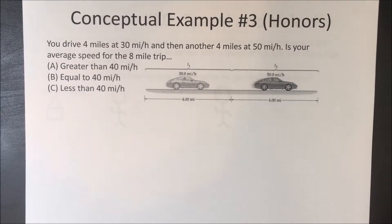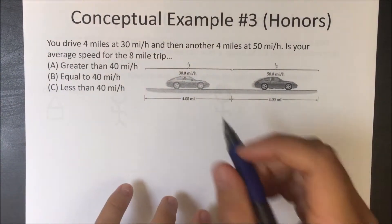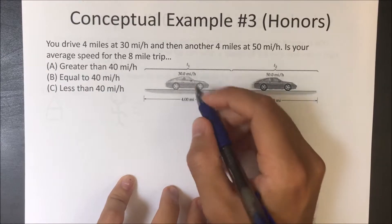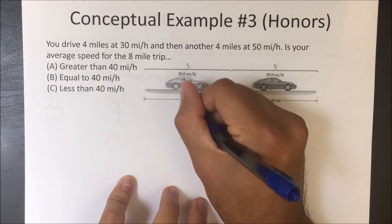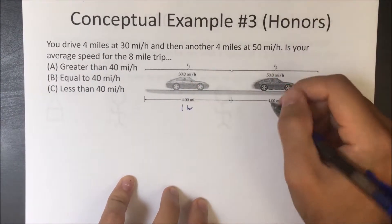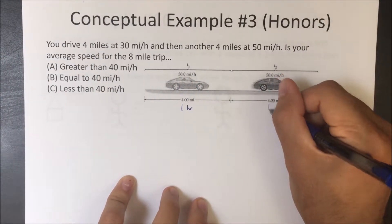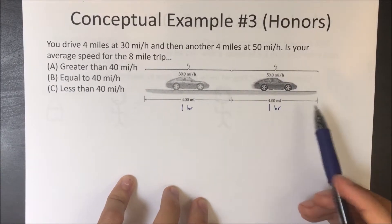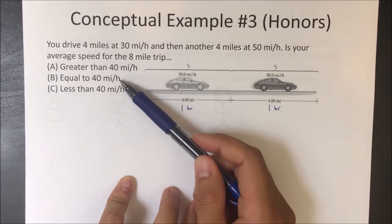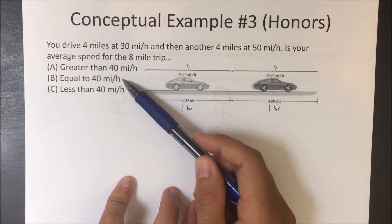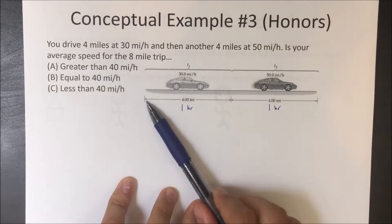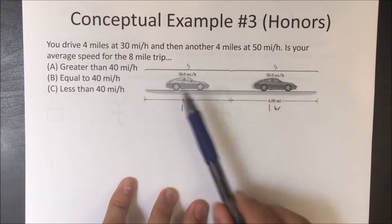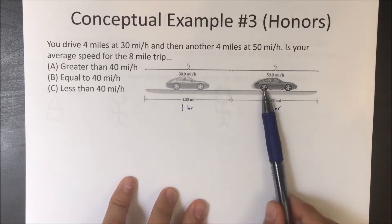For example, if the problem said you're going 30 miles an hour for 1 hour and then 50 miles an hour for 1 hour, what is your average velocity? Then it would be equal to 40 miles an hour. But these cars are not going different miles per hour for the same amount of time.